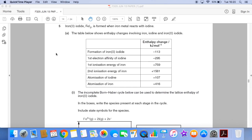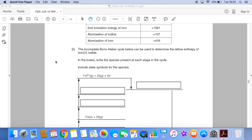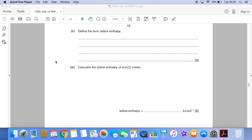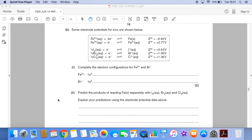So I'll go through the question and you have a go and then I'll go through the answers. We're given some data with enthalpy changes and the first thing we've got to do is complete the Born-Haber cycle. We've then got to define the term lattice enthalpy and then calculate the lattice enthalpy for iron(II) iodide using the cycle we've constructed and the data in the table. Now I've got some electrode potential information, the question starts by asking some electronic configurations of two ions Fe2+ and Br-, and then using the electrode potential data we have to predict the products of reacting iron separately with iodine, bromine and chlorine.